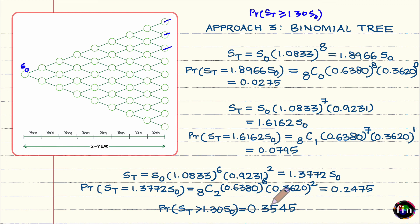In this video we have examined the log-normal distribution assumption which the Black-Scholes model makes for future stock prices. We explored this assumption by working through a calculation using three approaches, and validated it by comparing against the binomial model.